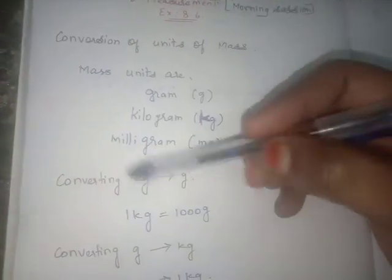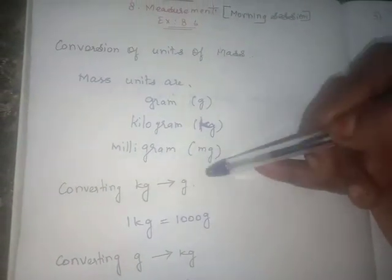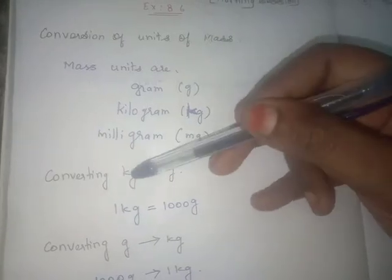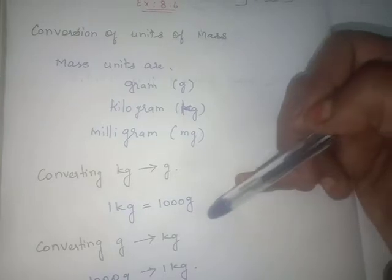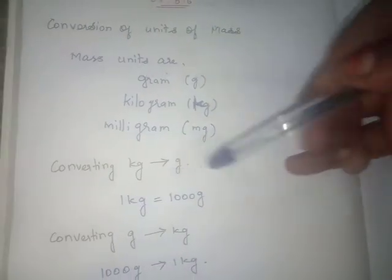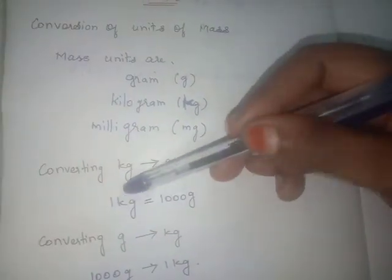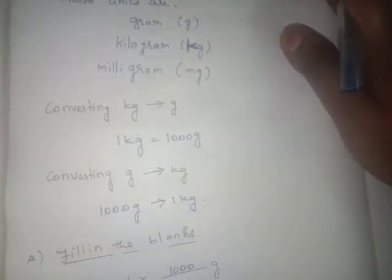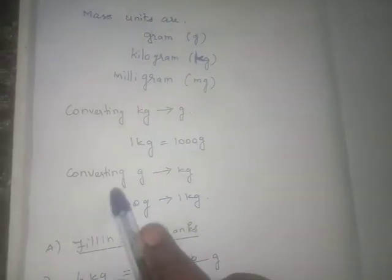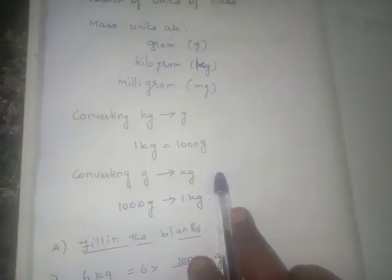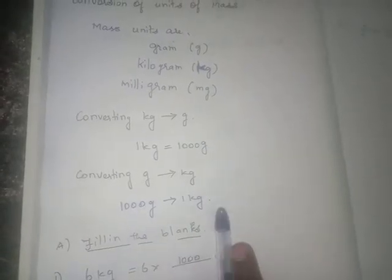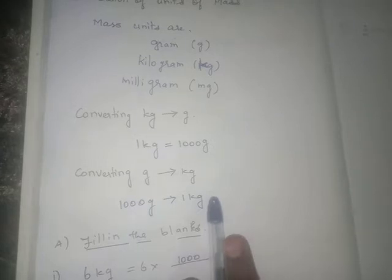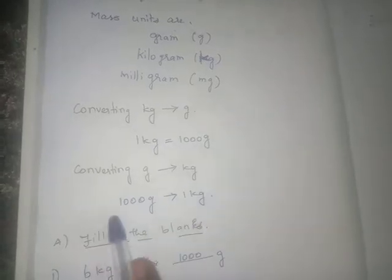Converting kilogram to gram: kilogram is the bigger unit and gram is the smaller one. One kilogram is equal to one thousand grams, so we multiply. Converting gram to kilogram: every thousand grams makes one kilogram, so we divide by one thousand to get the kilogram.